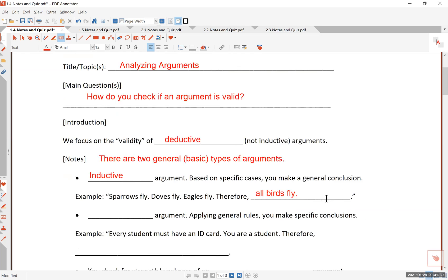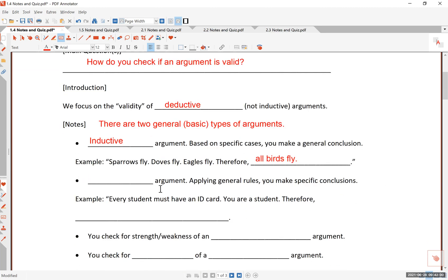Now, this happens to be a wrong conclusion, right? Because, for instance, chickens, you can argue, do not fly. Penguins are certainly birds, but they do not fly. They swim instead. And so all birds fly is an overgeneralization. But it is this type of argument going from specific to general conclusion that is called an inductive argument.